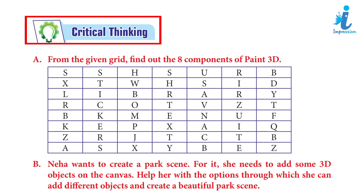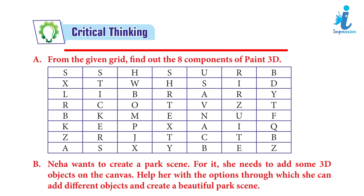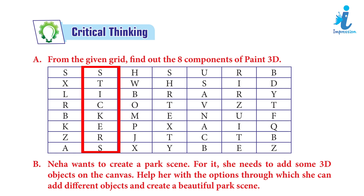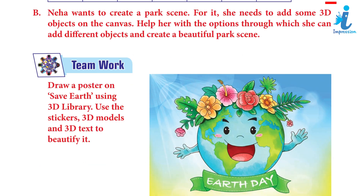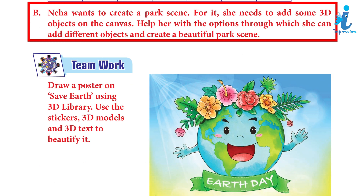Critical Thinking: A. From the given grid, find out the 8 components of Paint 3D. Answer: Stickers, Library, Text. B. Neha wants to create a park scene. For it, she needs to add some 3D objects on the canvas. Help her with the option through which she can add different objects and create a beautiful park scene. Answer: Students will do it themselves.